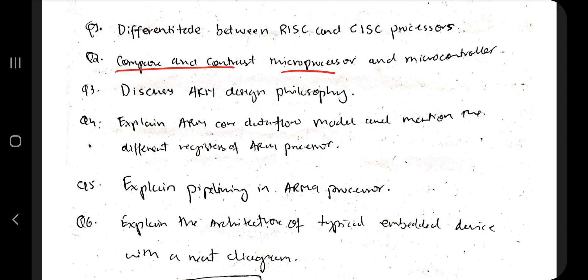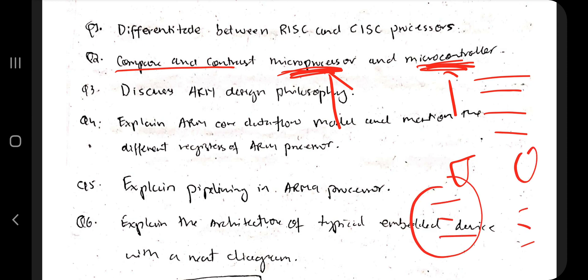The next question is compare and contrast microprocessor and microcontroller. What do you understand by the term microprocessor and what do you understand by the term microcontroller? What is the difference between them? What are its applications? Those key points you have to mention along with a diagram, as well as examples of where it is used—where is microprocessor used, where is microcontroller used.